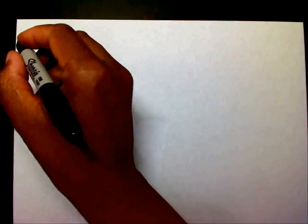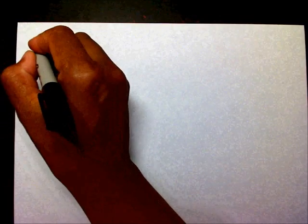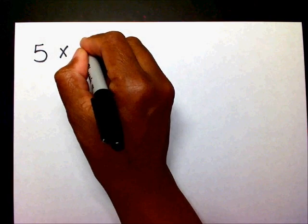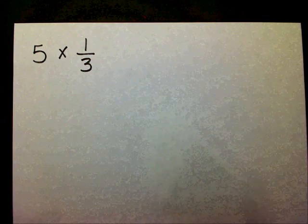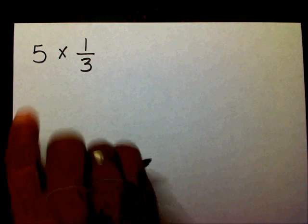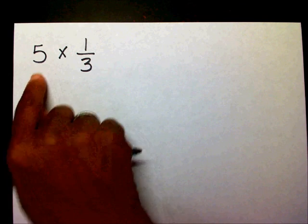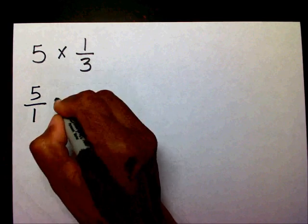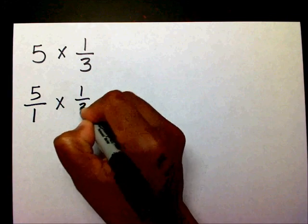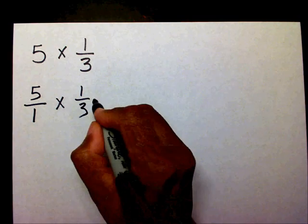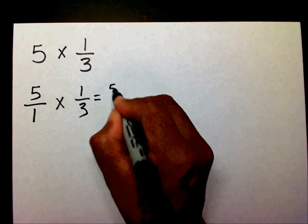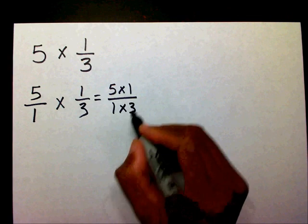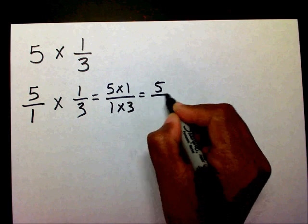Let's do 5 times 1 third. I need to change this whole number into a fraction. So I'm going to write 5 over 1 times 1 third. Now I'm going to multiply across: 5 times 1, and 1 times 3. 5 times 1 is 5, and 1 times 3 is 3.